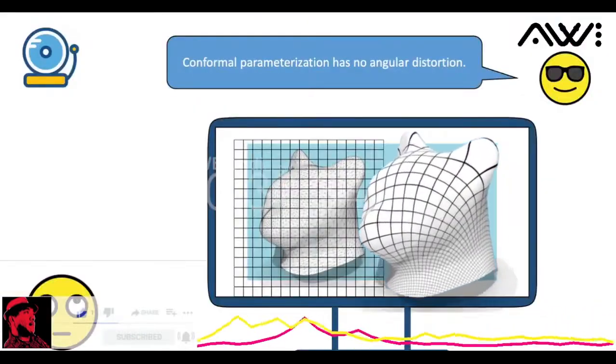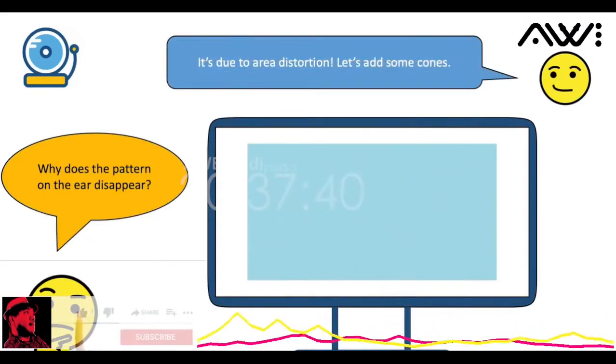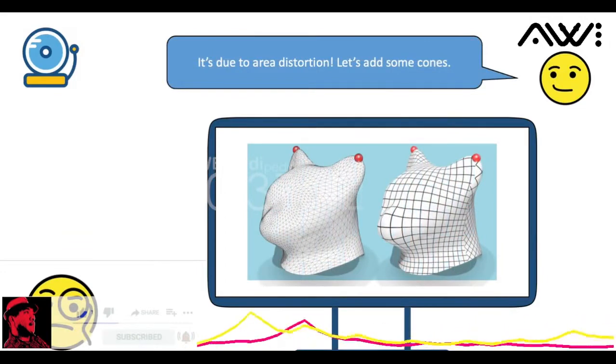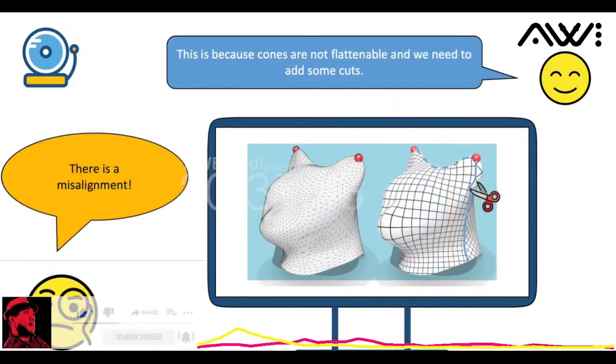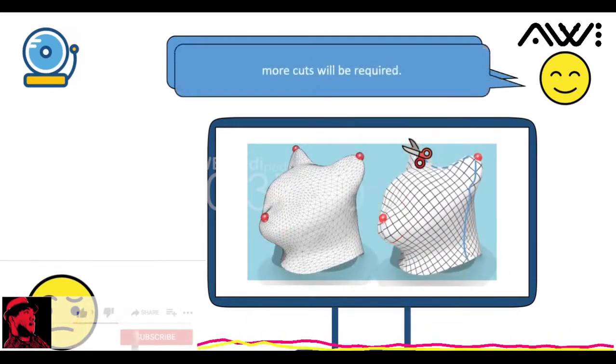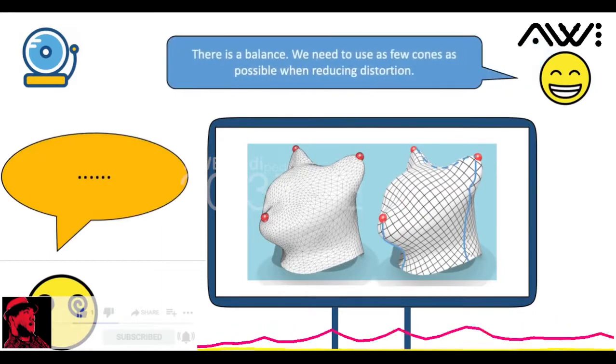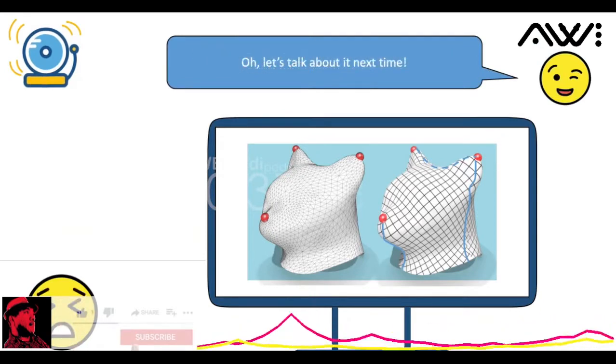Conformal parameterization has no angular distortion. Why does the pattern on the ear disappear? It's due to area distortion. Let's add some cones. There is a misalignment. This is because cones are not flattenable and we need to add some cuts. As more cones are added to reduce distortion, more cuts will be required. There is a balance. We need to use as few cones as possible when reducing distortion.